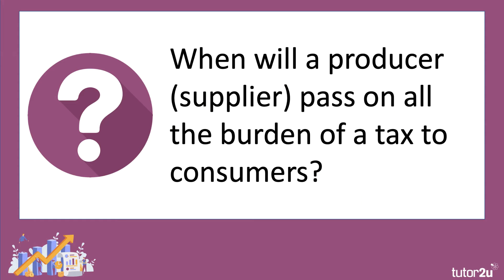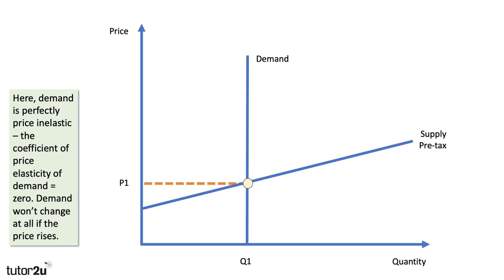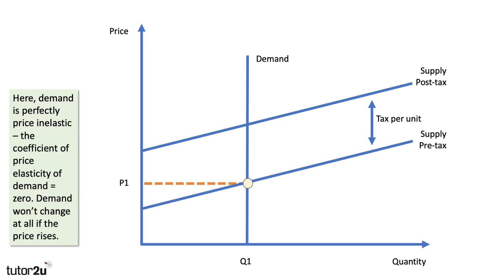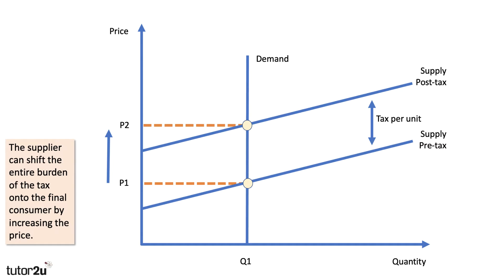When will a supplier pass on all of the burden of a tax to consumers? One situation is when demand is not sensitive at all to price — we call this perfectly inelastic demand, where the coefficient of elasticity is zero. If you draw a vertical demand curve, demand won't change at all if the price rises. So if we put in a tax, all that happens is the price goes up from P1 to P2, quantity doesn't change, and the supplier can shift the entire burden of the tax onto the final consumer. When price elasticity of demand is zero, the consumer bears all the tax.